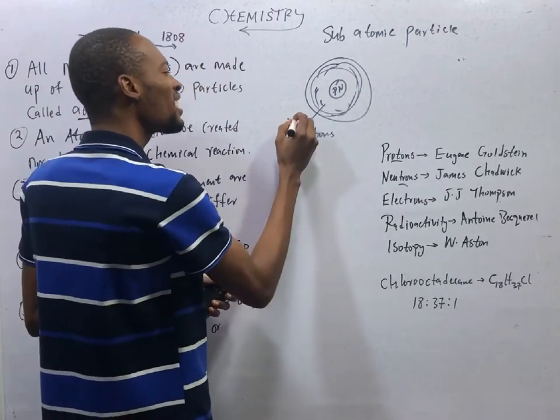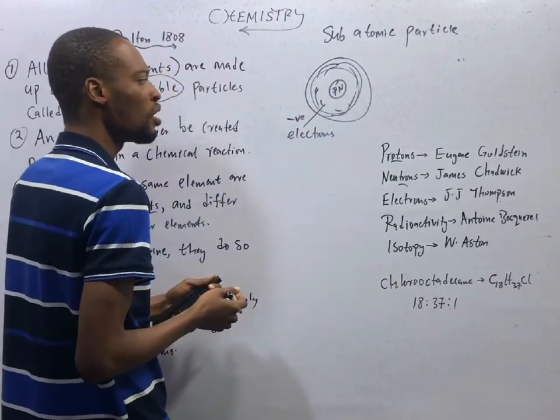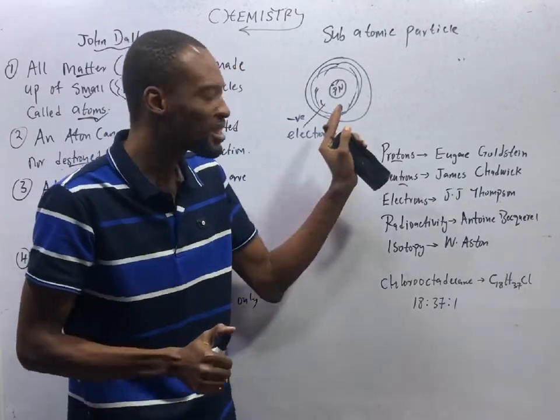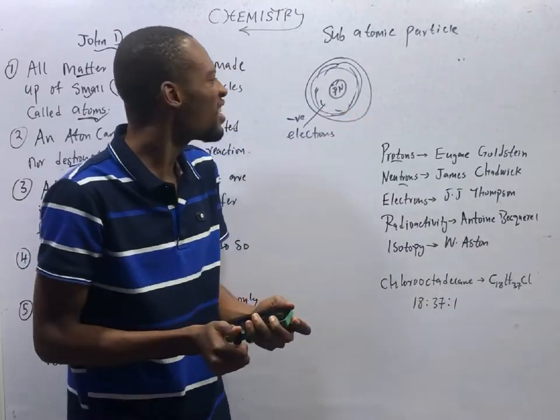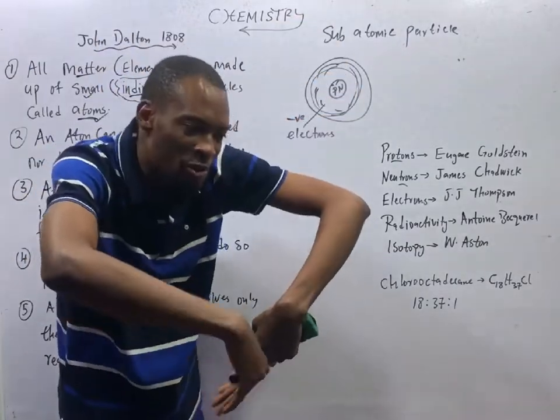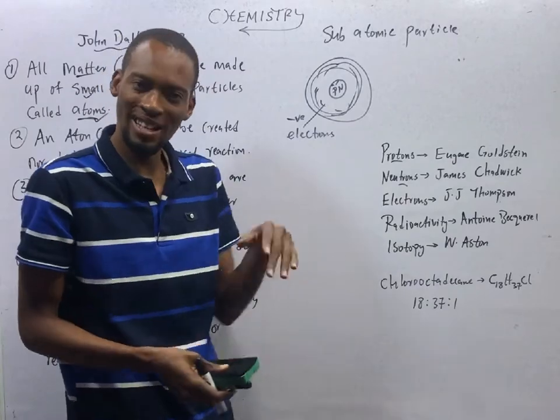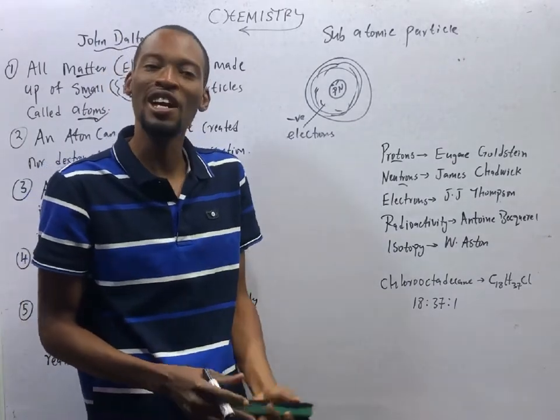Electrons are negatively charged particles. Protons are positively charged particles. While neutrons are particles with no charge. All these are sub-particles of atoms. And there is simply a theory that even proton has sub-particles called quarks.